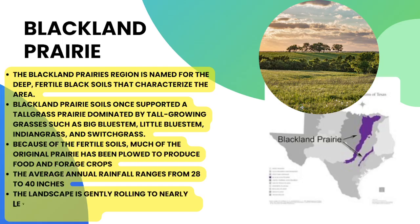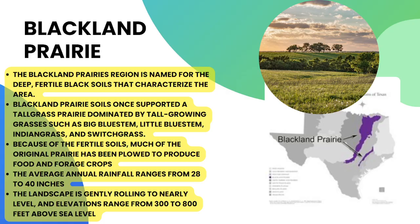The Blackland Prairie region is named for the deep, fertile black soils that characterize the area. These soils once supported a tall grass prairie dominated by tall grasses such as big bluestem, little bluestem, Indian grass, and switchgrass. Because of the fertile soils, much of the original prairie has been plowed to produce food and forage crops. Average annual rainfall ranges from 28 to 40 inches, and elevations range from 300 to 800 feet — very similar to the Post Oak Savanna.